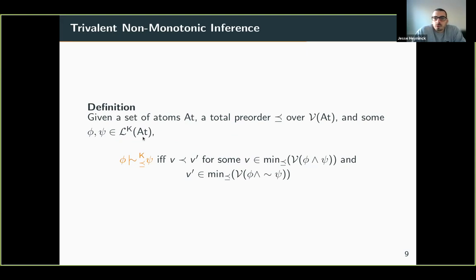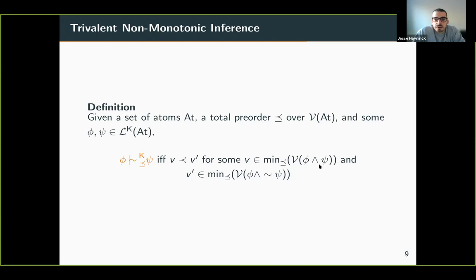That covers one corner of the triangle of related concepts. The second concept is non-monotonic inference. We defined non-monotonic inference for three-valued interpretations: there is a total pre-order over the three-valued interpretations representing relative plausibility, and we say 'if phi then usually psi' holds if and only if the minimal confirming interpretation — satisfying both antecedent and consequent — is strictly more plausible than the minimal falsifying interpretation — satisfying the antecedent but falsifying the consequent. This is a generalization of the KLM semantics for non-monotonic inference to the three-valued setting.